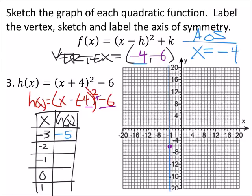So I would have negative 3, negative 5. That's about right there. So I'll make that a different color. And then we got negative 2 plus 4 is 2, 2 squared is 4, minus 6 is negative 2. So negative 2 and negative 2. Then we got negative 1 plus 4 is 3, squared is 9, minus 6 is 3.